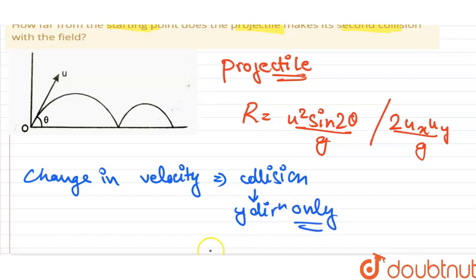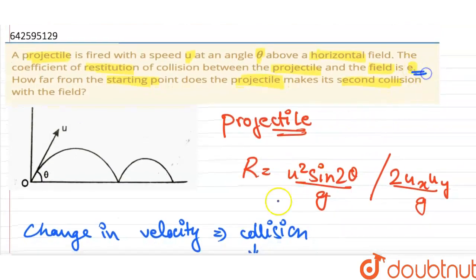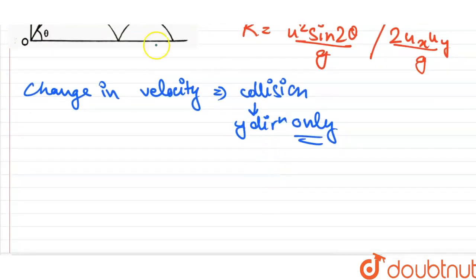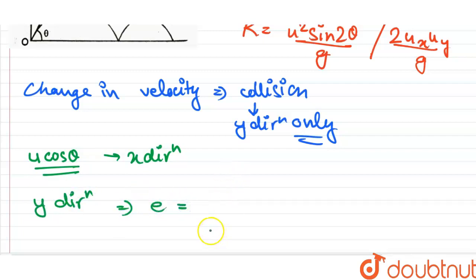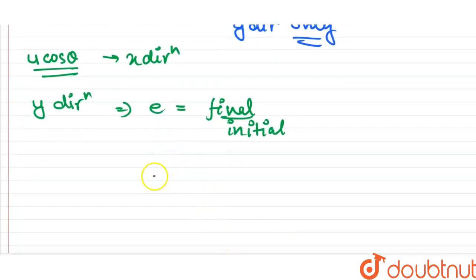Okay, so given that coefficient of restitution is e, we can find that velocity in x direction will remain u cos theta. But velocity in y direction can be taken out from the formula e equals final upon initial velocity. We know e into initial velocity is u sin theta and this will come out to be our final velocity, let's say v.